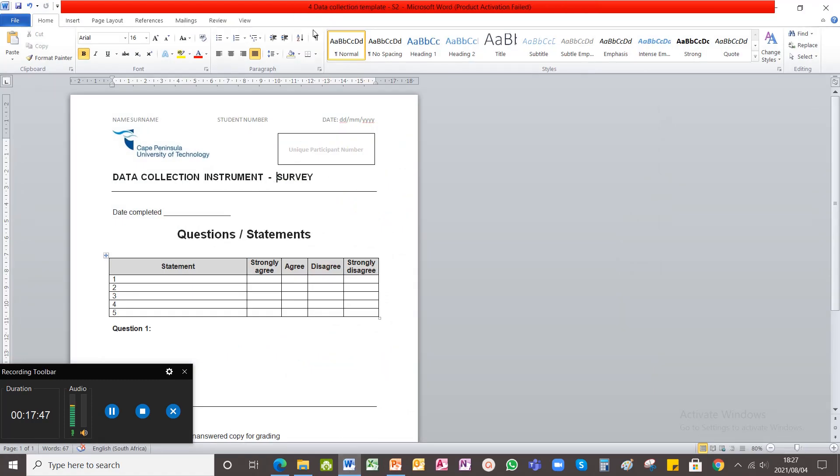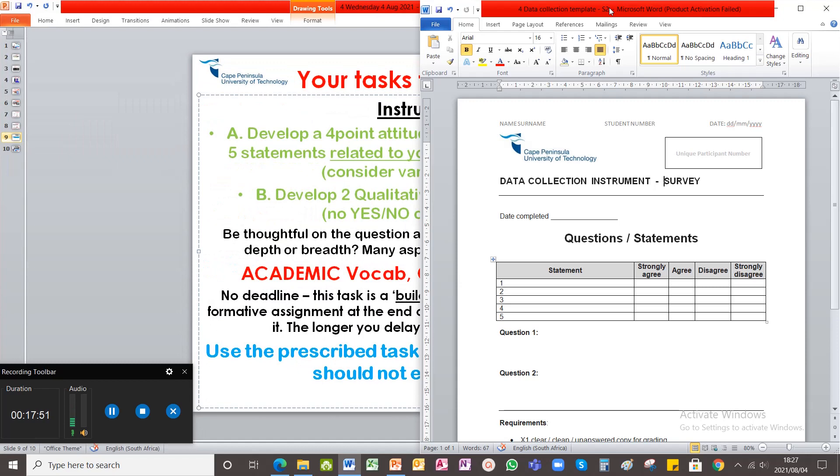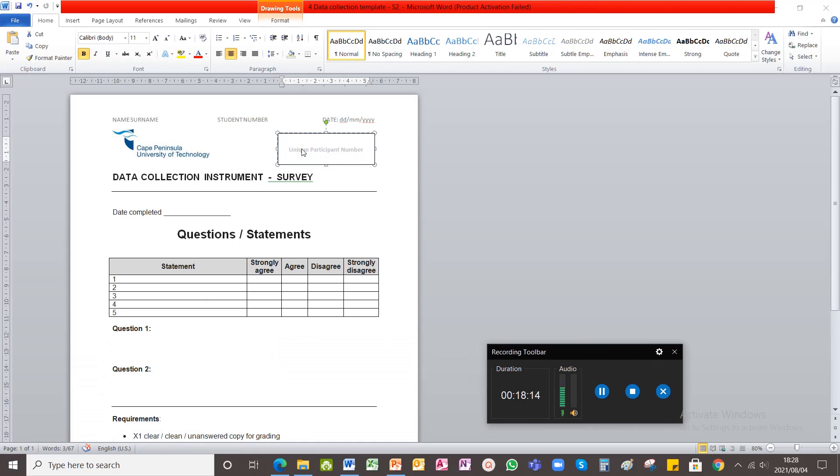The task template looks like this. So this is your data collection instrument. It is a survey. Over here, your participant, once you give your participant a survey, you will insert their unique participant number which you have done in the last task, last week's task. Here is a table where you will insert your five statements only over here. Here you will not put anything in here. This section is for your participants. That's not for you. I'm just going to highlight that gray. Your section is over here. You have to insert five statements regarding your research topic.